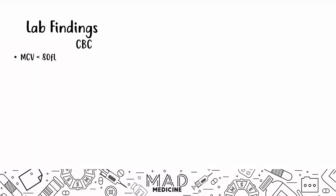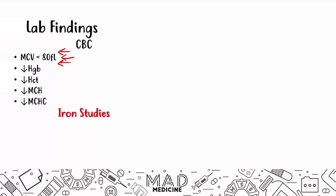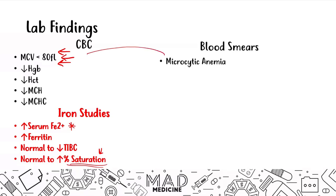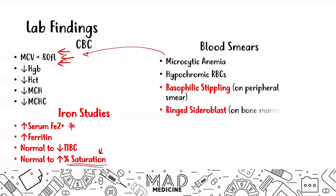When it comes to lab findings on CBC, you're going to see evidence of microcytic anemia — mainly an MCV that is very low, less than 80. Red blood cell measurements and indices are also going to be low. In the iron studies, you're going to see increased serum iron levels as well as ferritin, but you're going to have a normal to low transferrin or TIBC and a normal to high percent saturation. That makes sense because high serum iron has to bind to transferrin, leading to an increase in percent saturation. On the blood smear, you may see hypochromatic RBCs, basophilic stippling on the peripheral blood smear, and ring sideroblasts on the bone marrow.